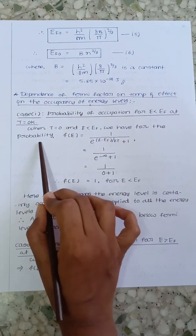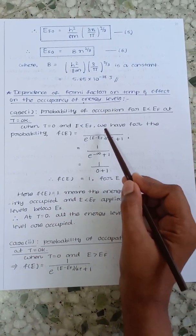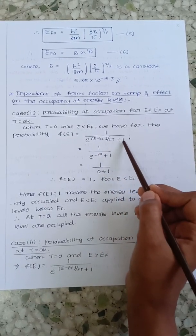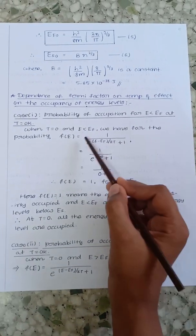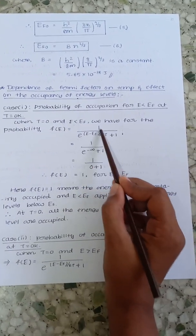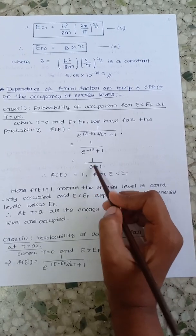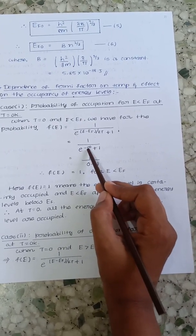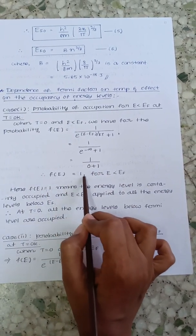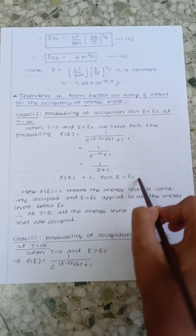Let us consider the expression of Fermi factor: F(E) equals 1 by e to the power of (E minus EF) by KT plus 1. When energy is less than Fermi energy, this becomes e to the power of minus infinity, which is nothing but 0. Therefore, F(E) equals 1 when energy is less than Fermi energy.